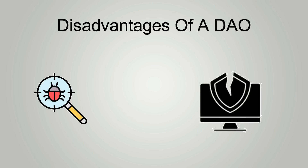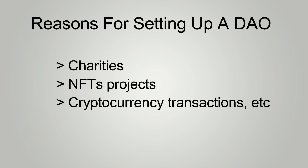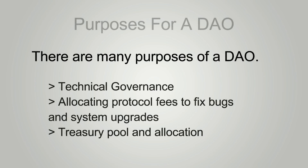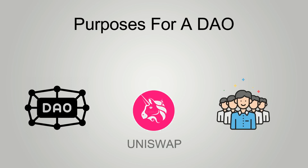DAOs are set up for many reasons — some for charities, NFT projects, cryptocurrency transactions, etc. The purpose of a DAO can be a significant determinant of the type of voting rights members are granted. Some DAOs, such as Uniswap, focus on technical governance, giving token holders the right to vote on distributing a portion of the fees that the protocol collects amongst members. Protocols such as Compound allow token holders to vote on allocating protocol fees towards fixing bugs and system upgrades.